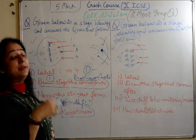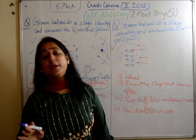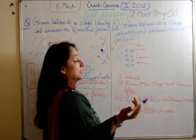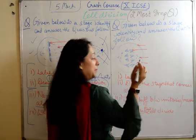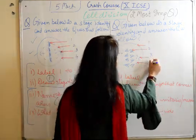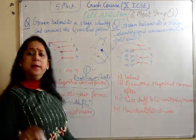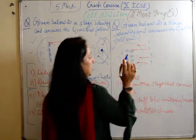This makes a five marker. Now you clearly know that the first two questions will be from the diagram and the next questions will be from the chapter, so you cannot miss on the chapter. Moving to the next question: given below the stage, identify and answer the questions that follow. First is label, for sure - one, two, three, and four you have to label.